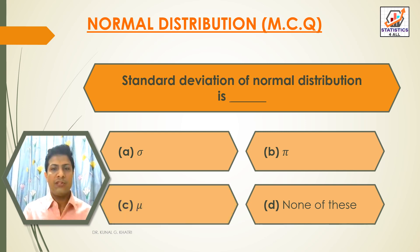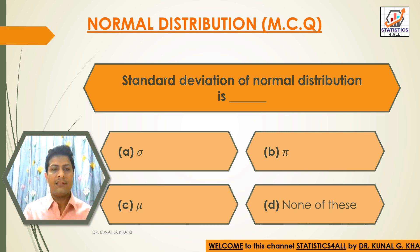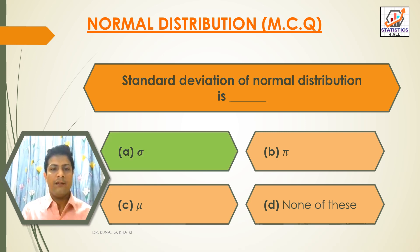Next question: Standard deviation of normal distribution is — Option A: sigma. Option B: pi. Option C: mu. Option D: none of these. The answer is Option A — sigma. The standard deviation of normal distribution is sigma.